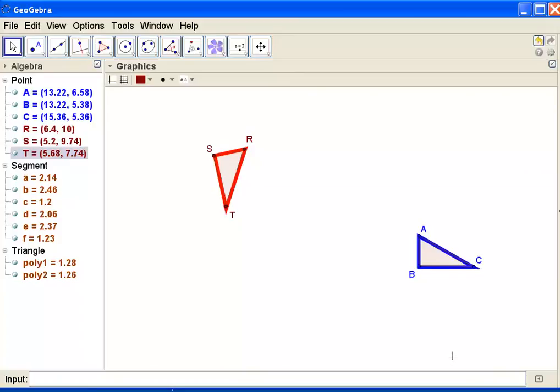The angle corresponding to angle A will be the larger of the acute angles here, R. S looks like it might be a right angle, and T is my small acute angle.